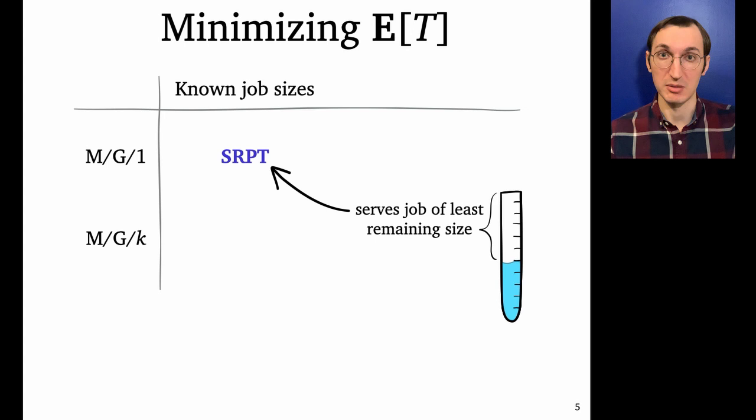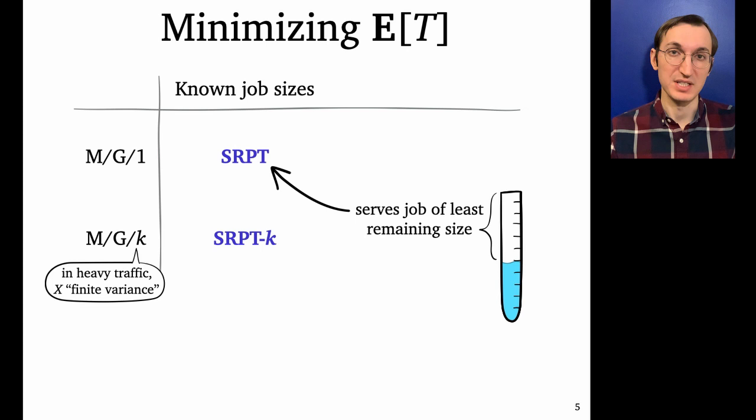In the multi-server case, the situation is a lot more complicated. In work that we presented actually two years ago at Performance in 2018, we showed that the k server version of SRPT, which we call SRPT-k, is optimal, not all the time in the M/G/k, but under certain conditions in heavy traffic, that is, as load approaches capacity. And SRPT-k, what it does is it just serves the k jobs of least remaining size, as opposed to just the single least remaining.